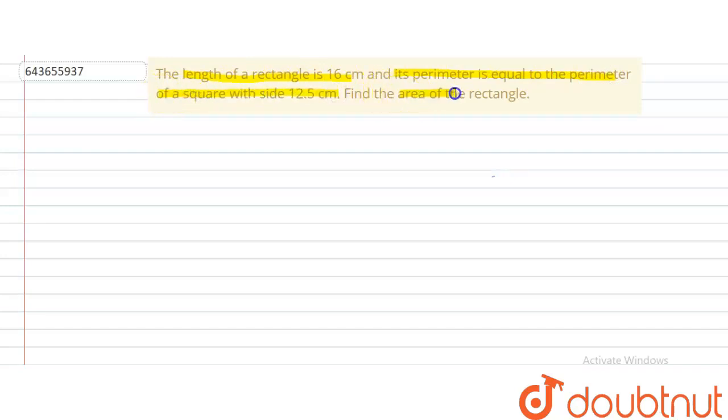Find the area of the rectangle. So first we draw the diagram. Draw a rectangle. This is a rectangle and a square. This is a square. So some data is given about these two. The length of rectangle is 16 cm is given, and side of square is 12.5 cm.